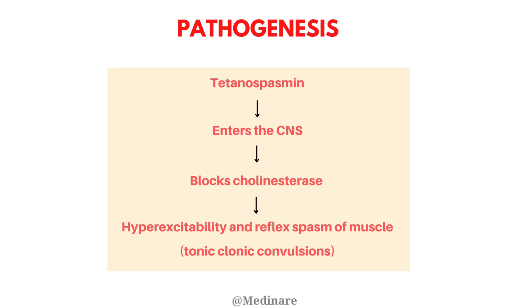When tetanospasmin is present in the circulation it causes toxemia — not bacteremia, since the bacteria is releasing the toxin. It blocks the neuromuscular junction by acting on the cholinesterase enzyme, thereby aggravating muscle spasm. So whether it reaches the central nervous system or acts via the circulation, both pathways can cause or aggravate muscle spasm.